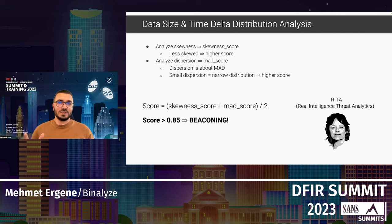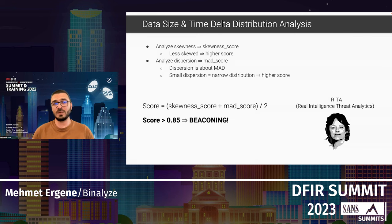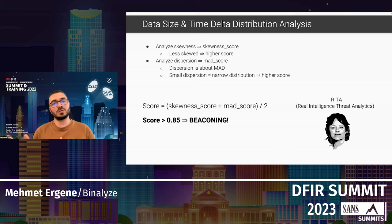Using all this information, we analyze the skewness and dispersion of both the data size list and the time delta list. For skewness, we produce a skewness score — less skewness gets a higher score. For dispersion, we produce a MAD score — smaller dispersion means a narrower distribution and a higher score. We average these two values to produce a final score, and if it's above a threshold like 0.85, we classify it as beaconing traffic.